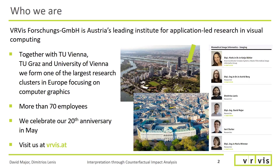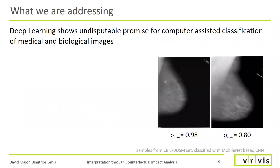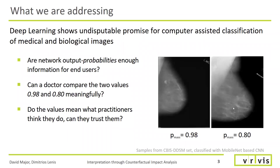What are we addressing with our paper? As we have all seen, deep learning holds undisputable promise for computer-assisted classification of medical and biological images. A typical setup would look like this: we input some images, here from mammography, into a network that in return responds with some probability-like values. By now, we as a community are used to these values, but are these output probabilities enough information for end-users?